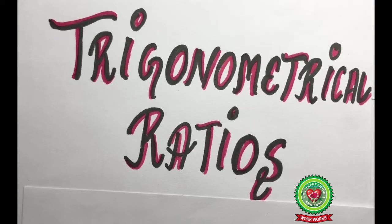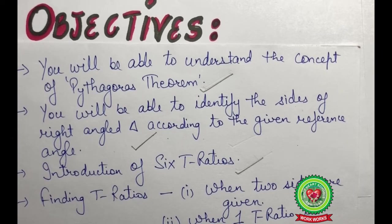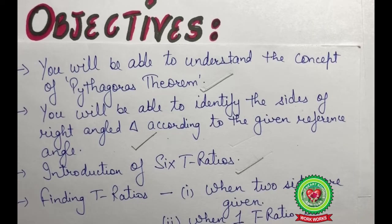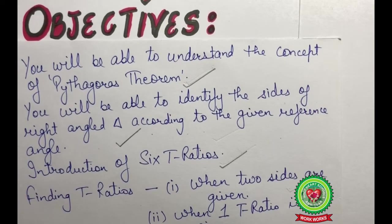Hello students, welcome back for another video on the topic trigonometrical ratios. In our previous video we discussed the six trig ratios: sine theta, cos theta, tan theta, cosecant theta, secant theta, and cotangent theta. Now we are going to discuss how to find trig ratios when two sides are given to us.